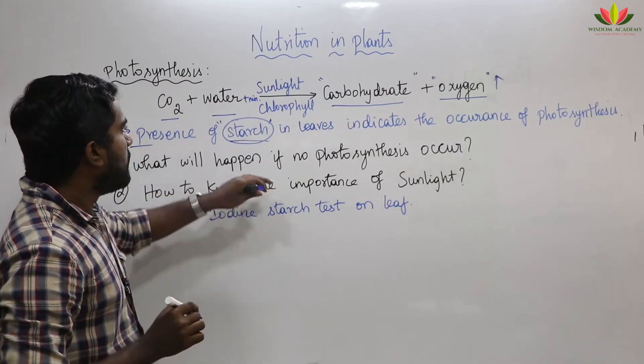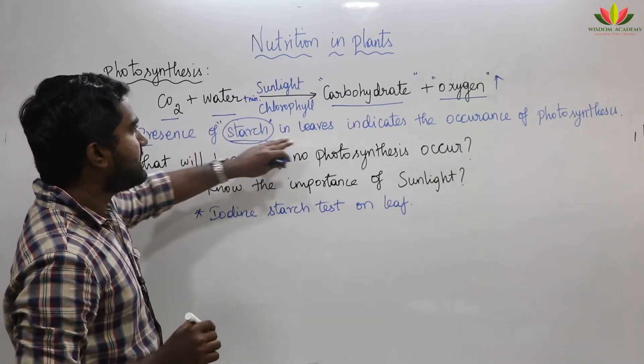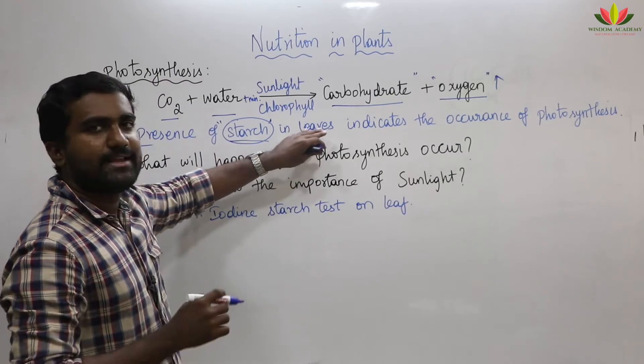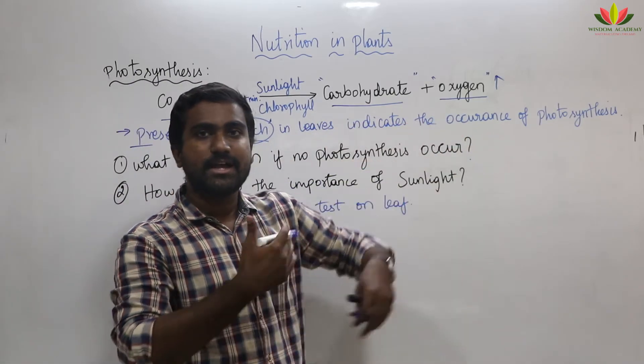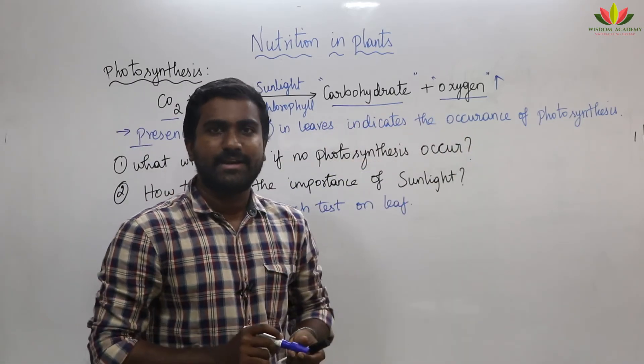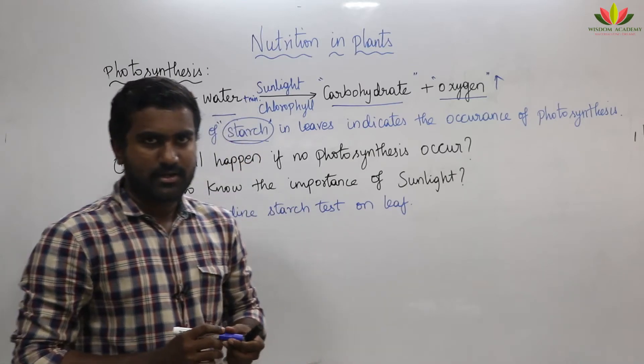This stored form of food is called starch. If starch is present in the leaves, it indicates that photosynthesis has taken place.